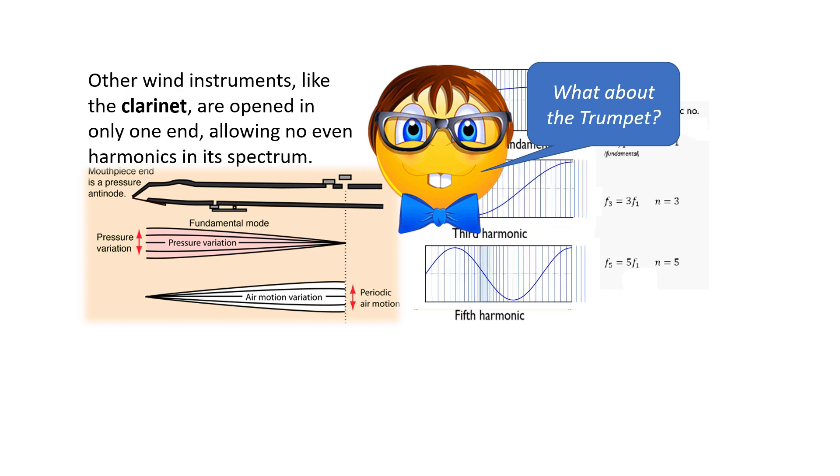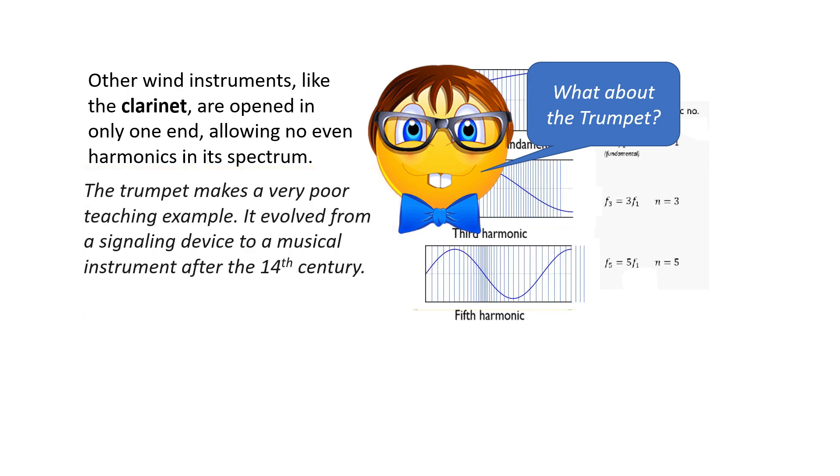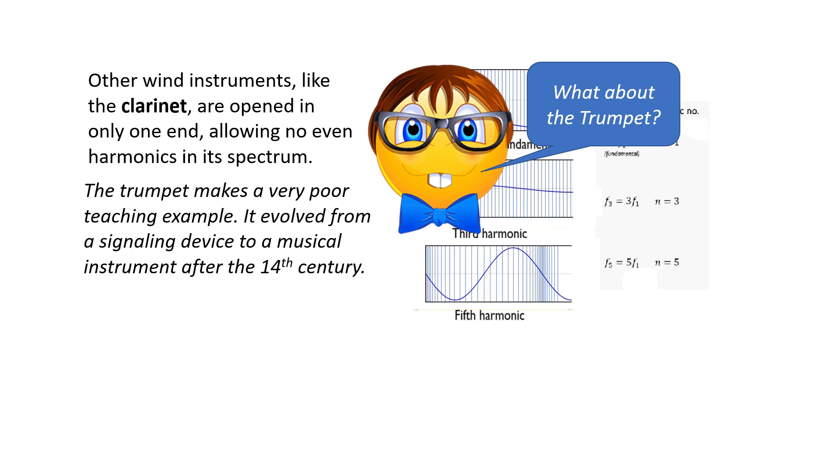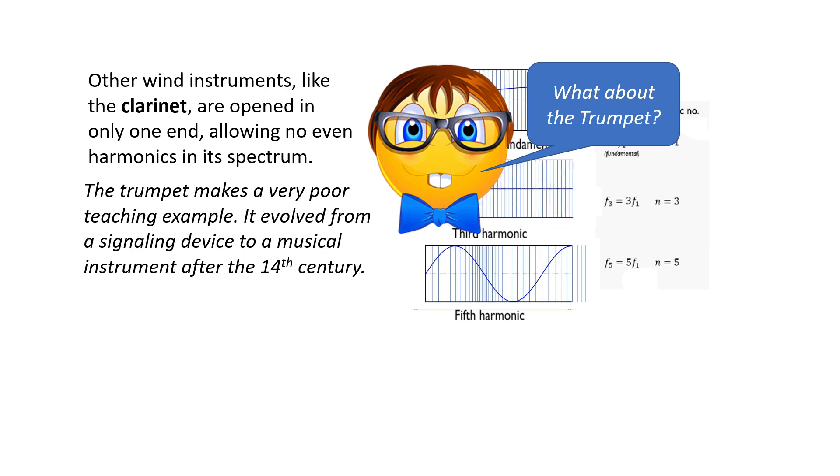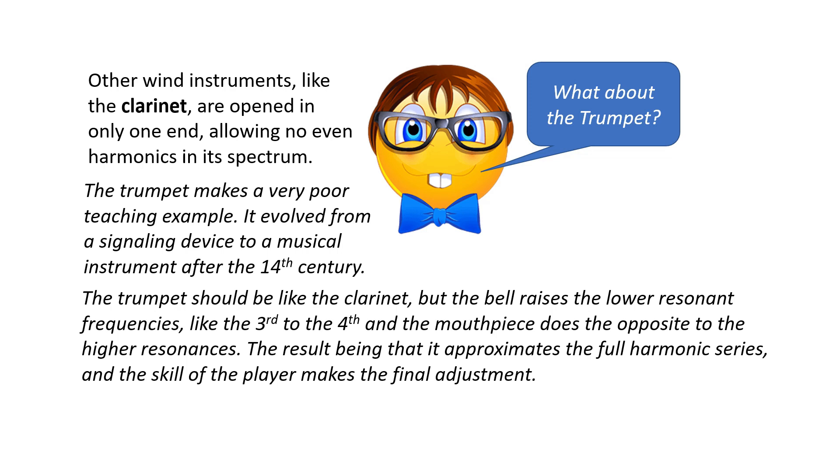What about the trumpet? The trumpet makes a very poor teaching example. It evolved from a signaling device to a musical instrument only after the 14th century. The trumpet should have been like a tube, but the bell raises the lower resonant frequencies, like the third to the fourth, and the mouthpiece does the opposite to the higher resonances. The result being that it approximates the full harmonic series, and the skill of the player makes the final adjustment.